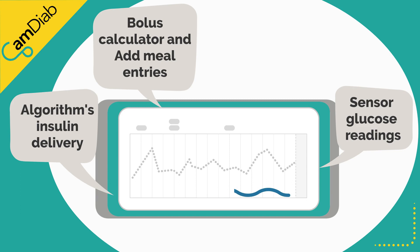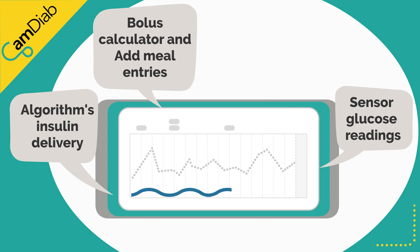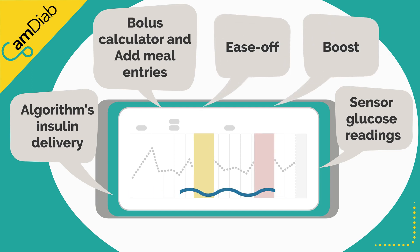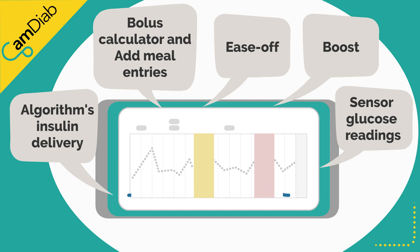You can see the algorithm's insulin delivery in blue at the bottom of the graph. If auto mode is not working, the pump's pre-programmed basal will be shown in blue. Times when boost and ease off have been used are also shown. You can pinch or scroll the graph to see more data.